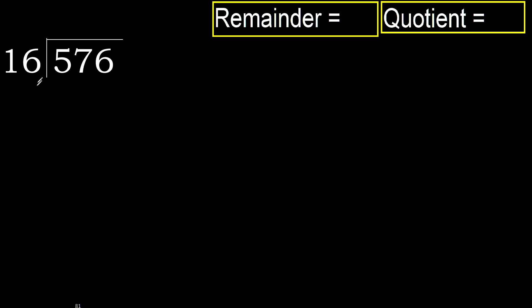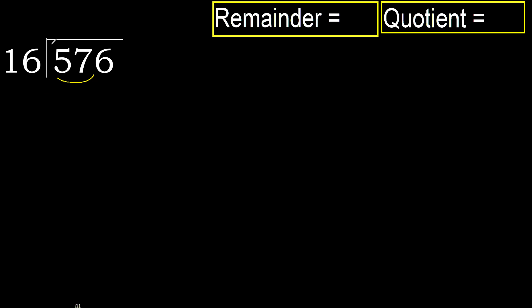576 divided by 16. 5 is less, therefore next. 57 is not less, therefore work with 57.